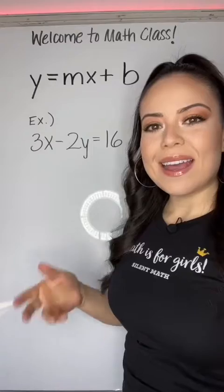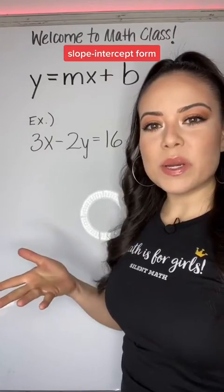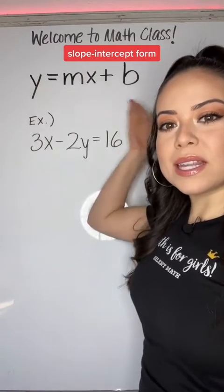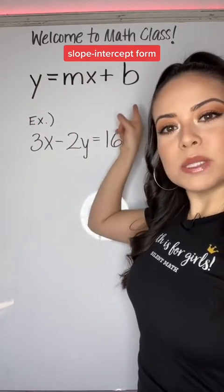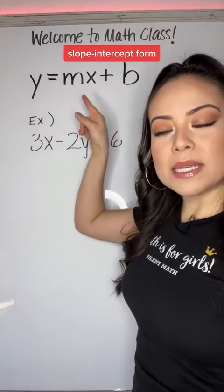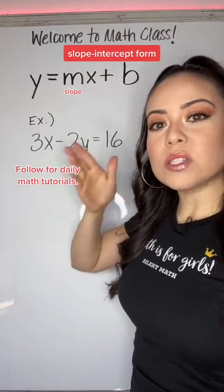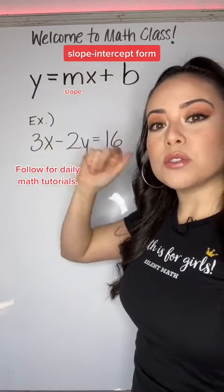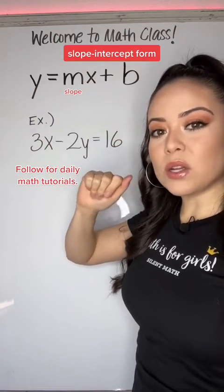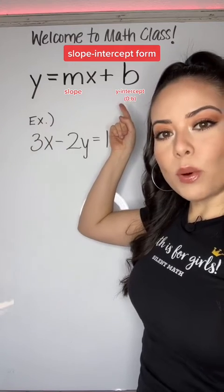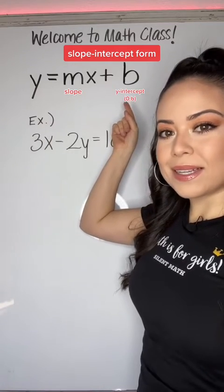Lulu here needs help with slope-intercept, so let me show you. An equation is written in slope-intercept form when it looks like this: y equals mx plus b, where m is the slope — how steep and in what direction your line is going — and b is your y-intercept, the point on the y-axis.